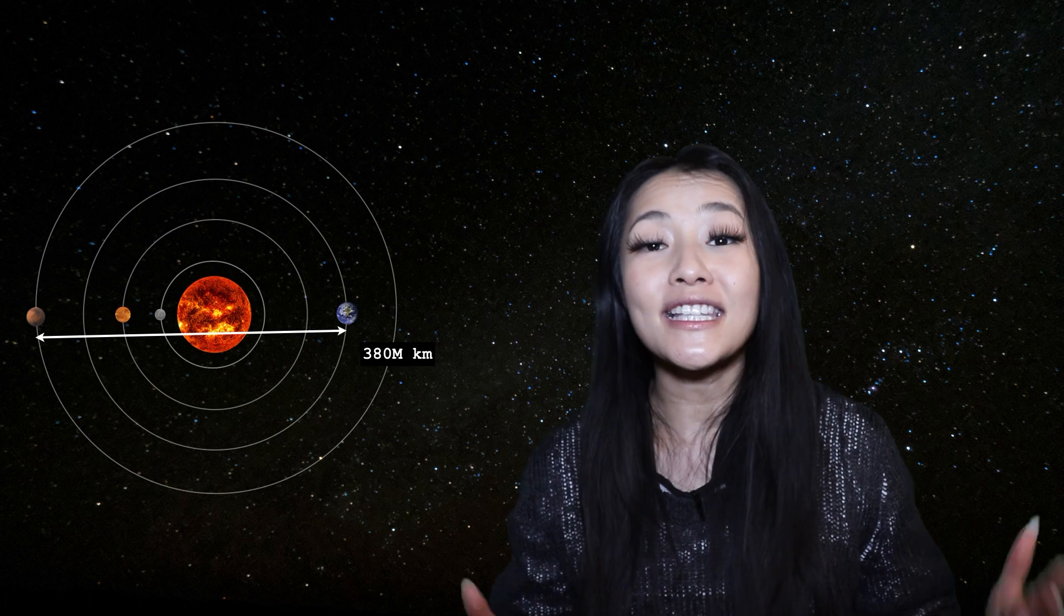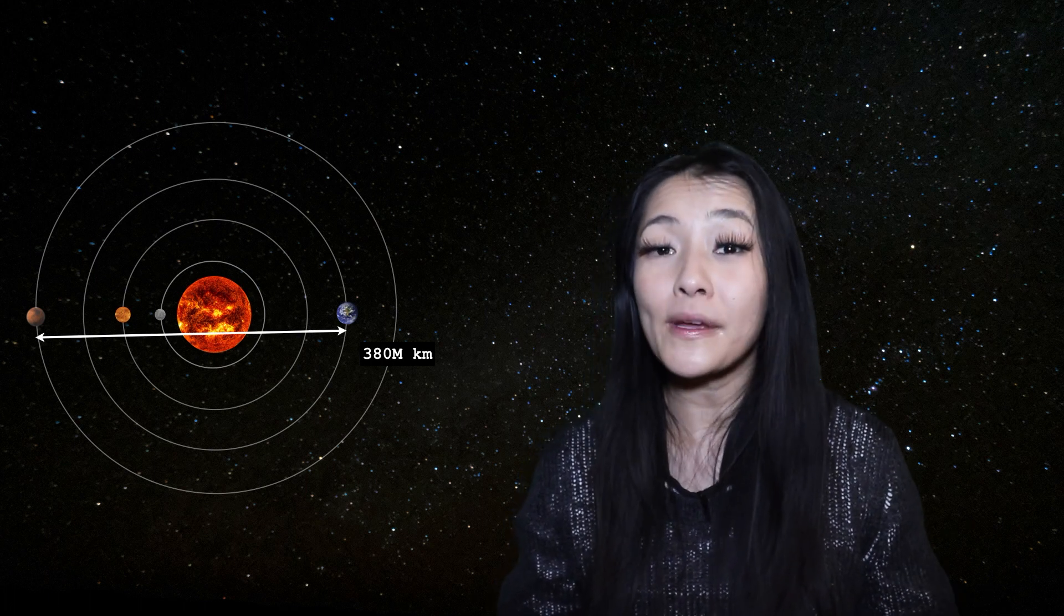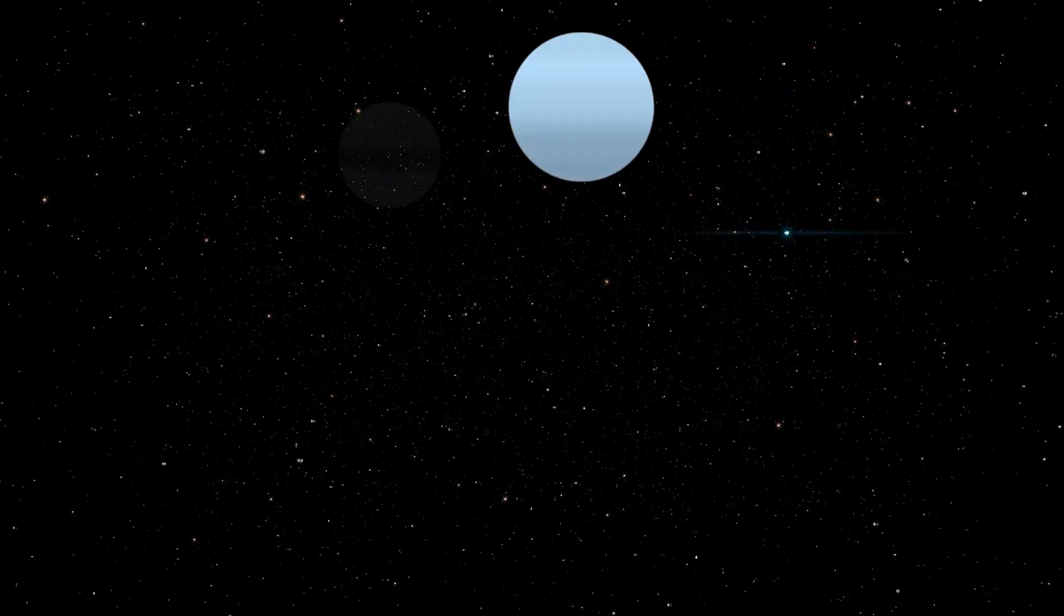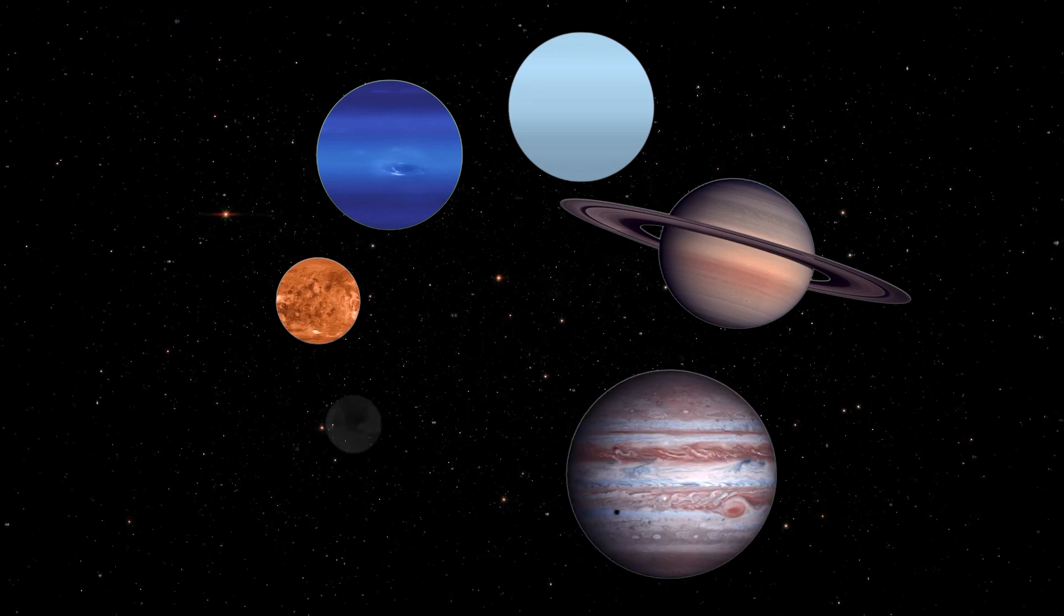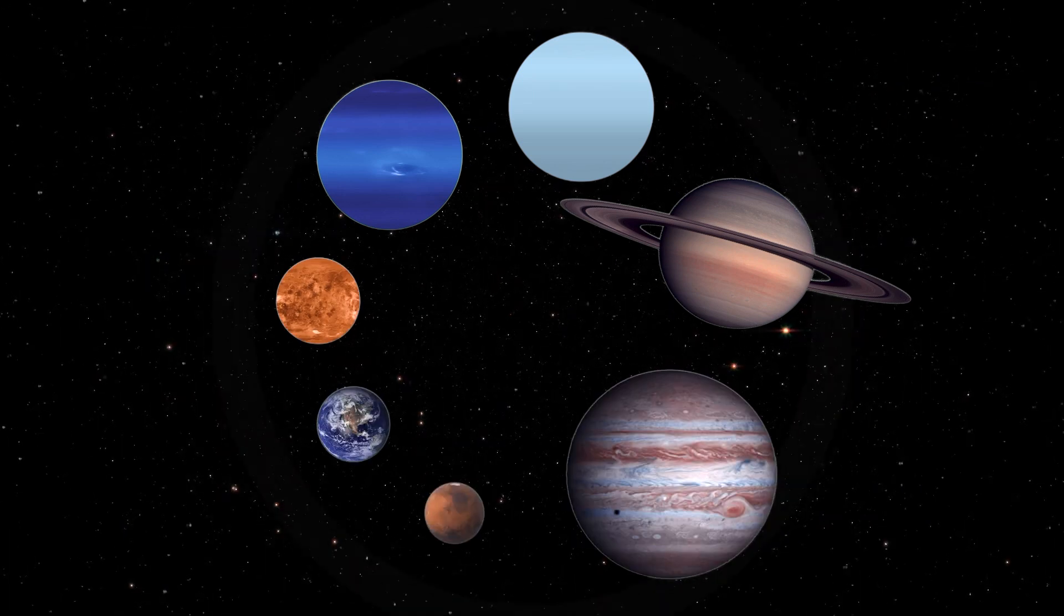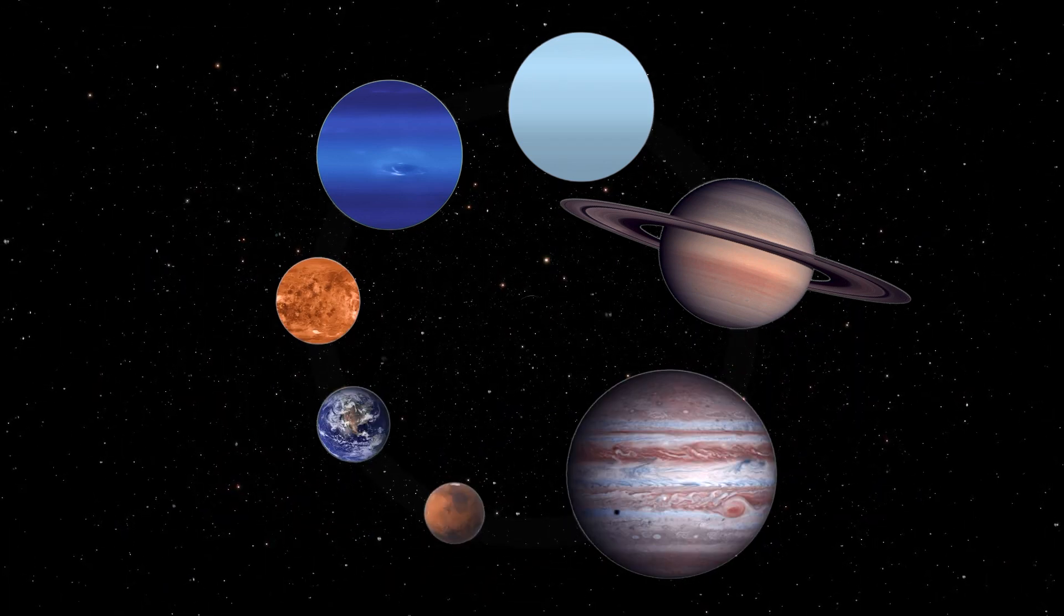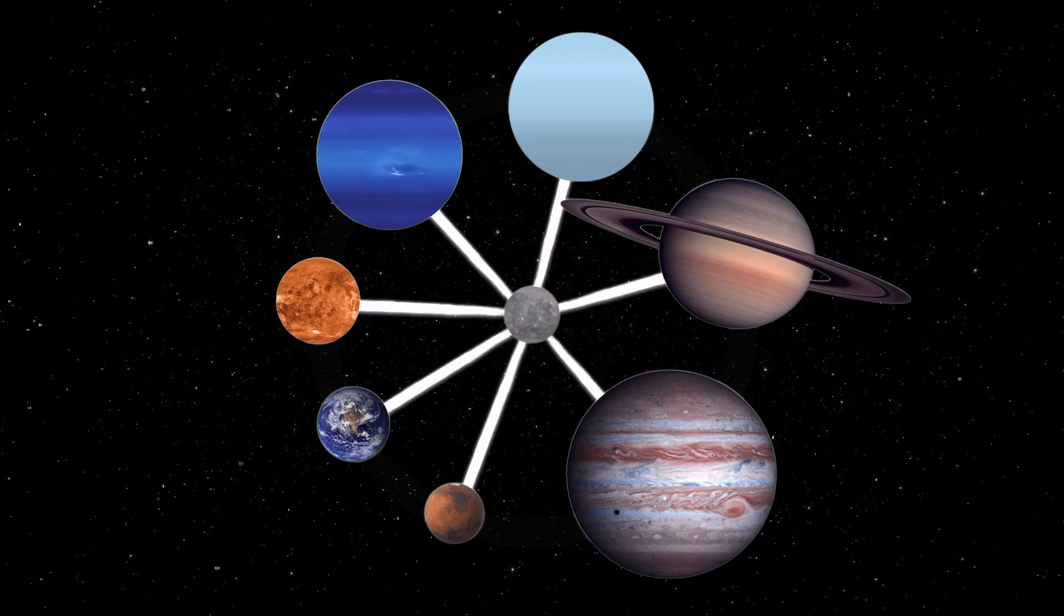So on average, you can see easily that Mercury will be closer to Earth. In fact, not only is Mercury Earth's closest neighbor, but Mercury is the closest planet of every planet in our solar system. Because the smaller the orbit, the smaller the furthest distance that it can get away.